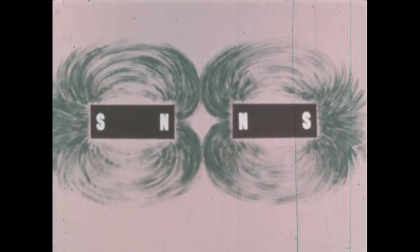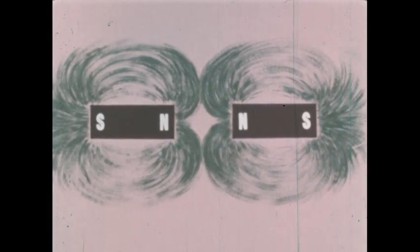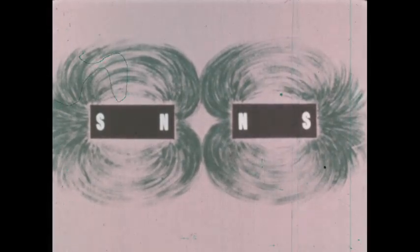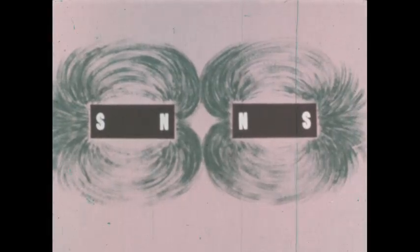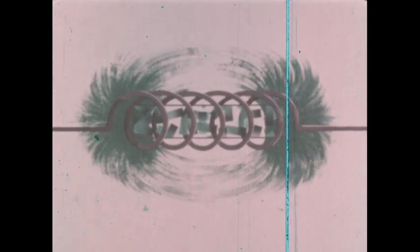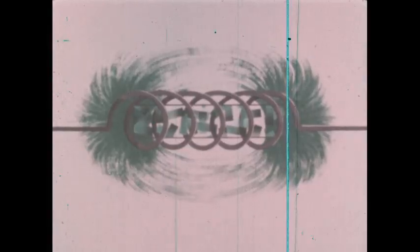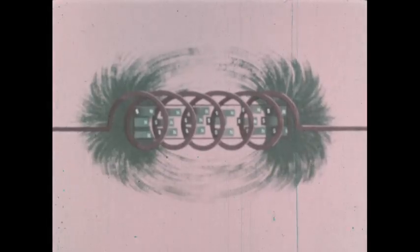There is still much we do not know about magnetism. Some scientists developed a theory which suggested that magnetic substances are made up of small particles which are themselves small magnets. This theory explained that when a material like this iron bar is not magnetized, the small magnets are scattered at random within the bar. What happens when the iron bar is magnetized? The particles line up with their north poles all pointing in the same direction.